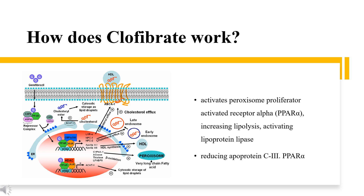Mechanism of action: Clofibrate increases the activity of extrahepatic lipoprotein lipase (LPL), thereby increasing lipoprotein triglyceride lipolysis. Chylomicrons are degraded, VLDLs are converted to LDLs, and LDLs are converted to HDL. There is a slight increase in secretion of lipids into the bile and ultimately the intestine. Clofibrate also inhibits the synthesis and increases the clearance of apolipoprotein B, a carrier molecule for VLDL. As a fibrate, clofibrate is an agonist of the PPAR-alpha receptor in cells of the liver and other tissues. This agonism ultimately leads to a modification in gene expression resulting in increased beta-oxidation, decreased triglyceride secretion, increased HDL, and increased lipoprotein lipase activity.